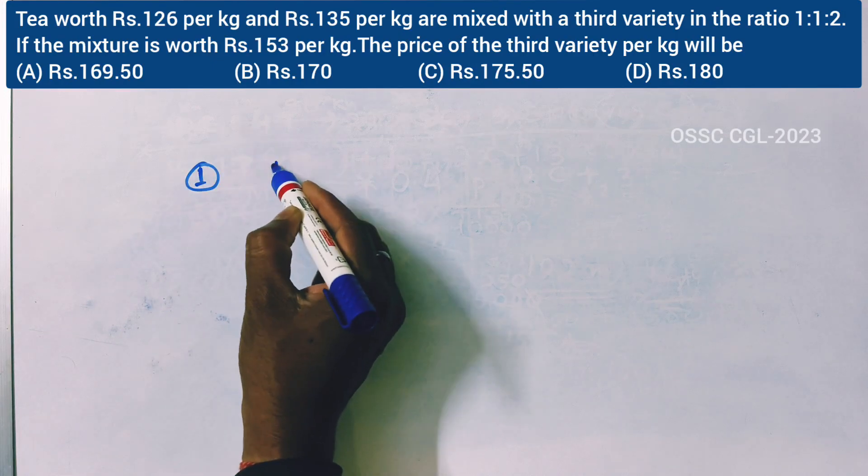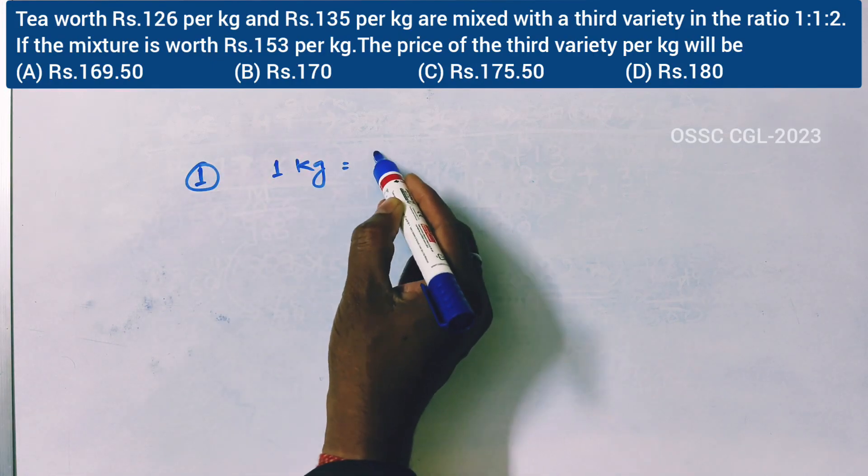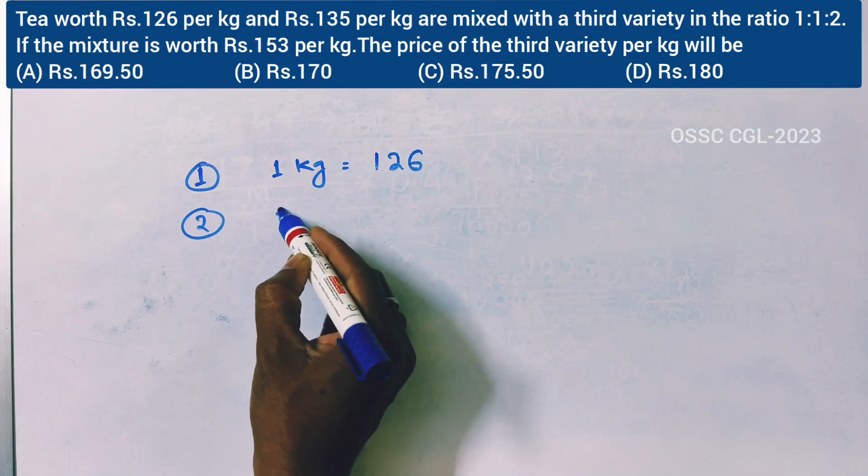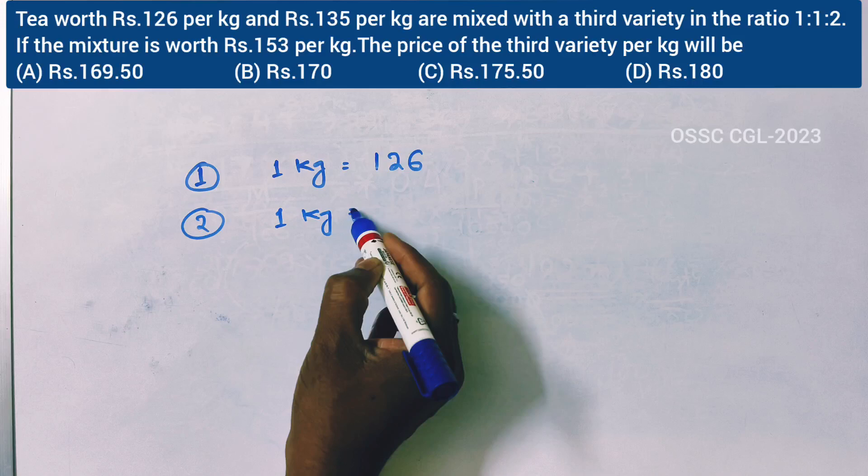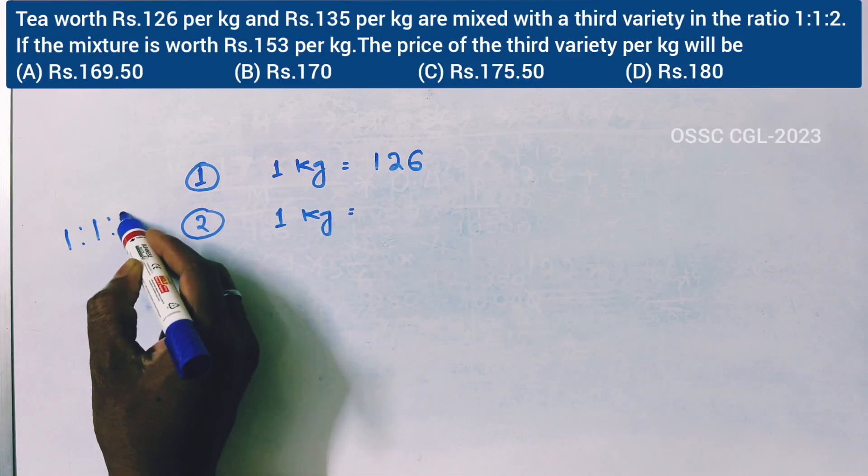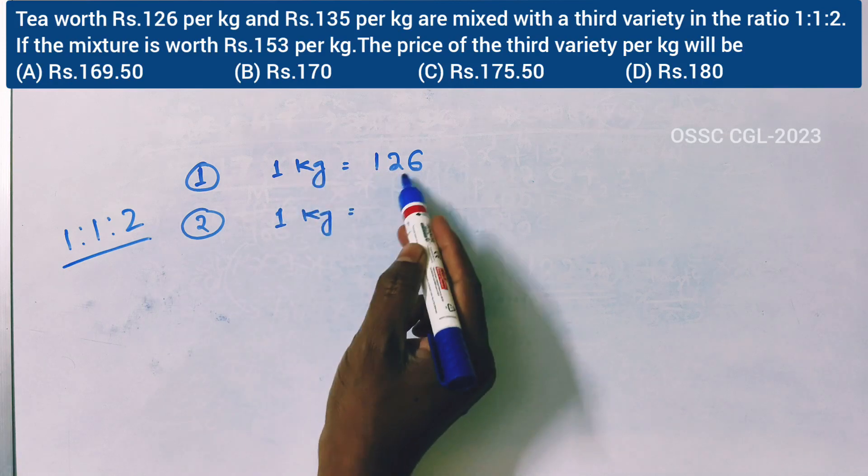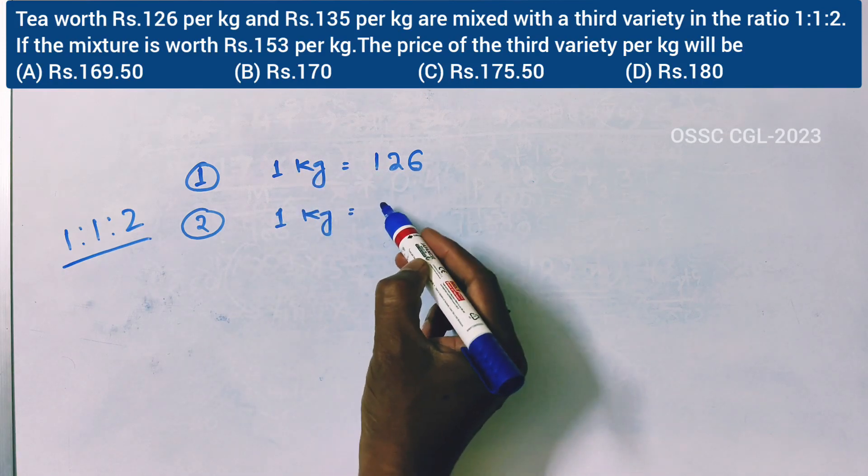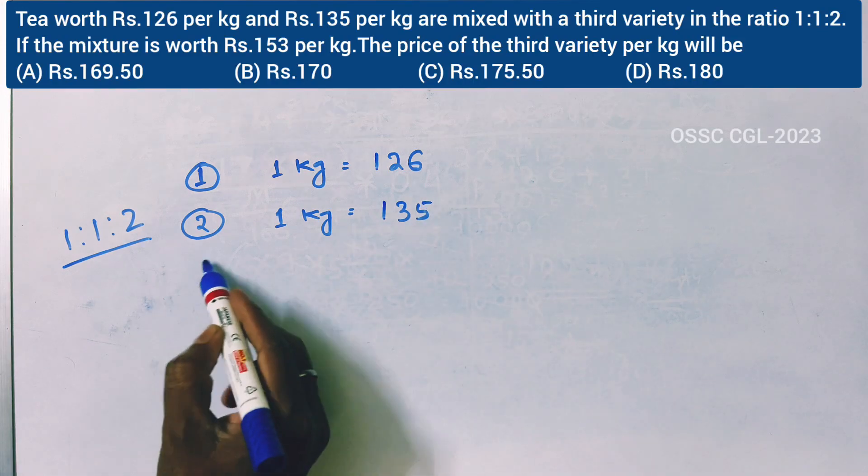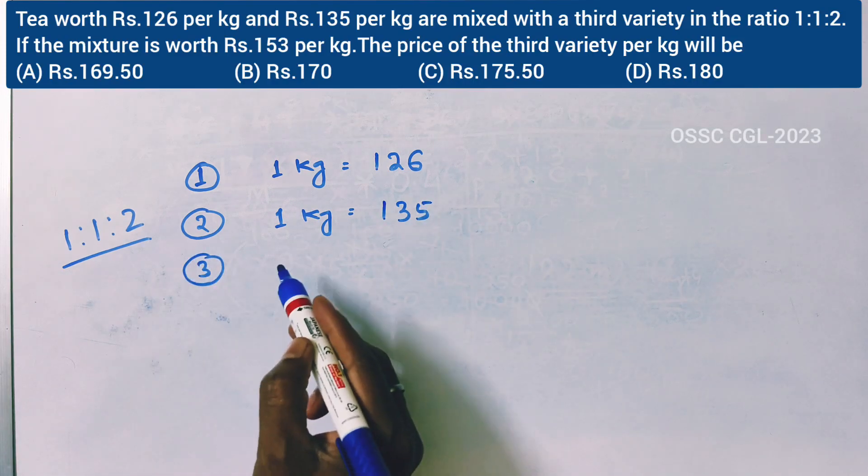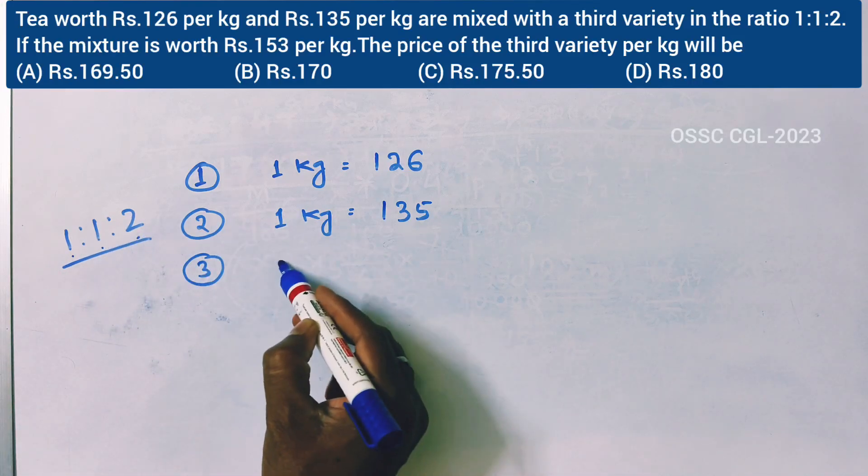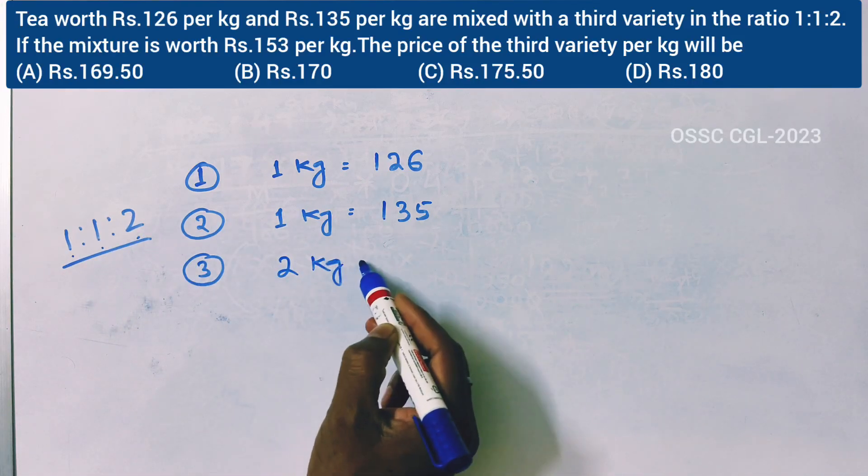First variety: 1 kg at Rs. 126. Second variety: 1 kg at Rs. 135. The ratio 1:1:2 means the third variety is 2 kg.